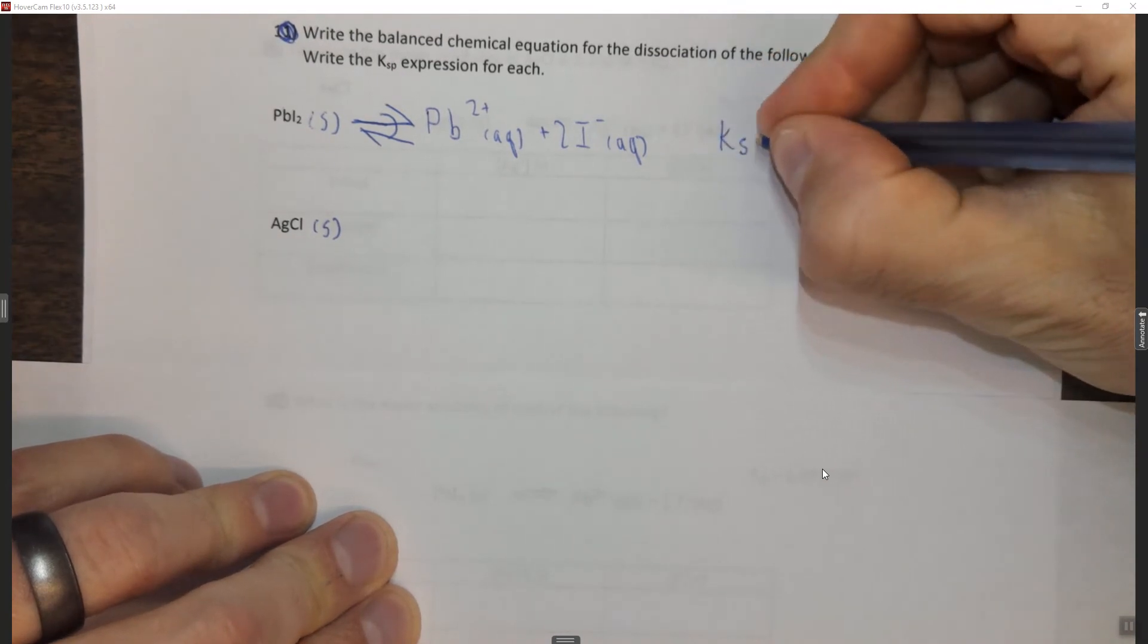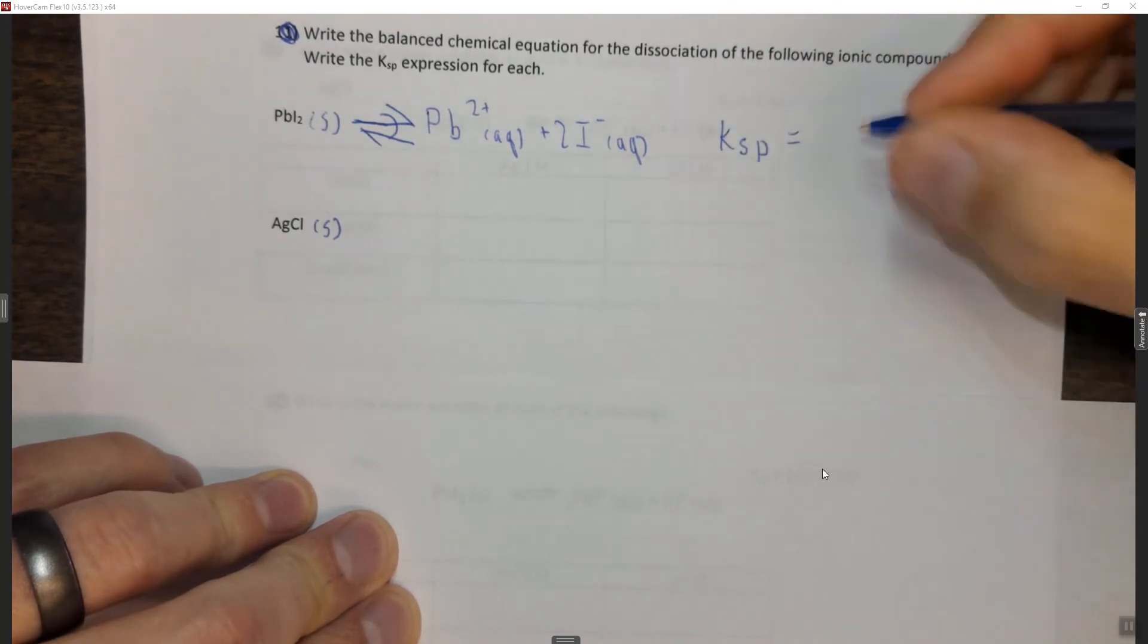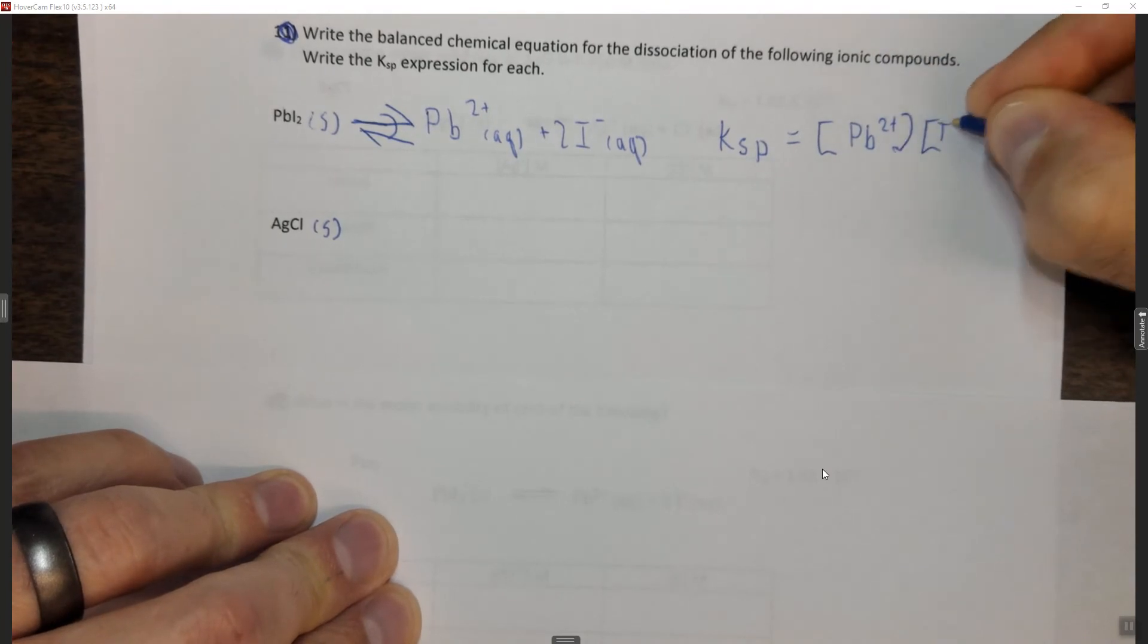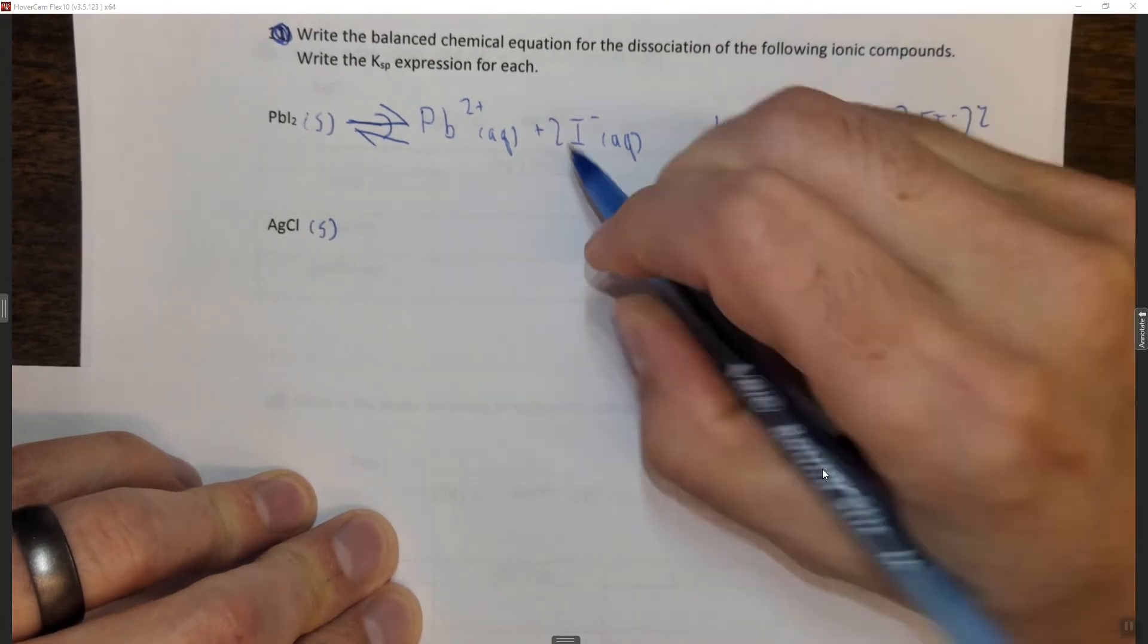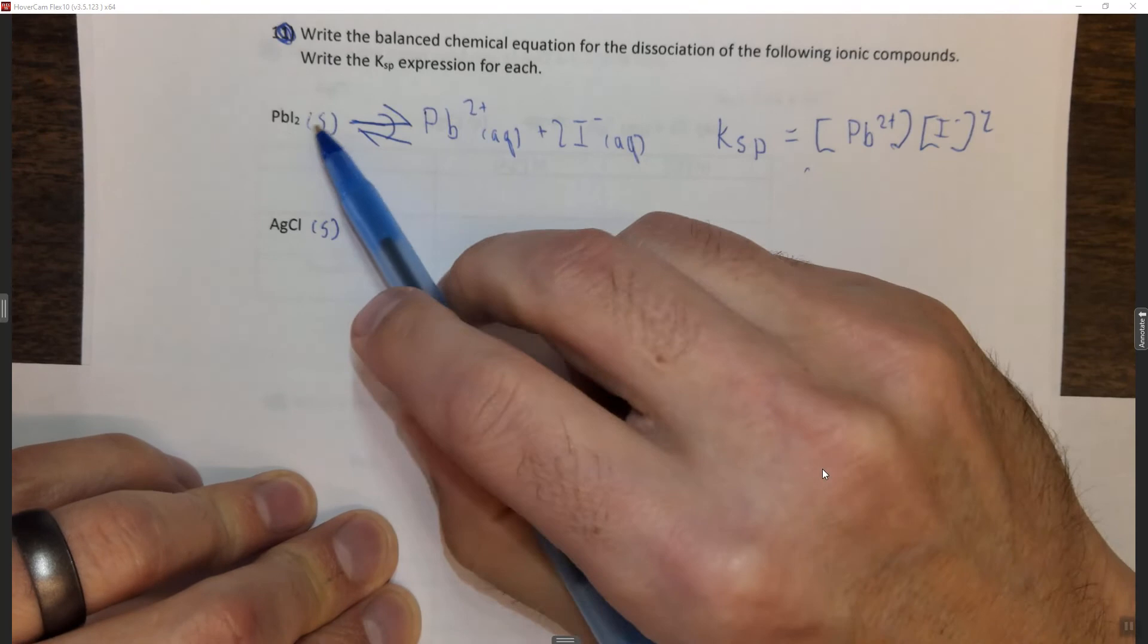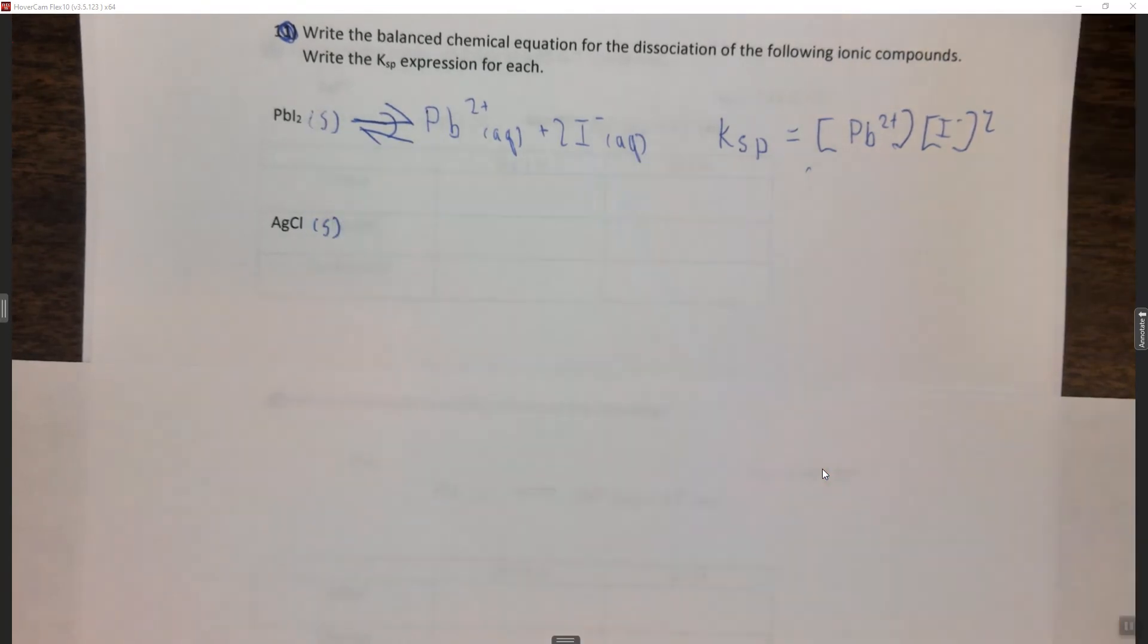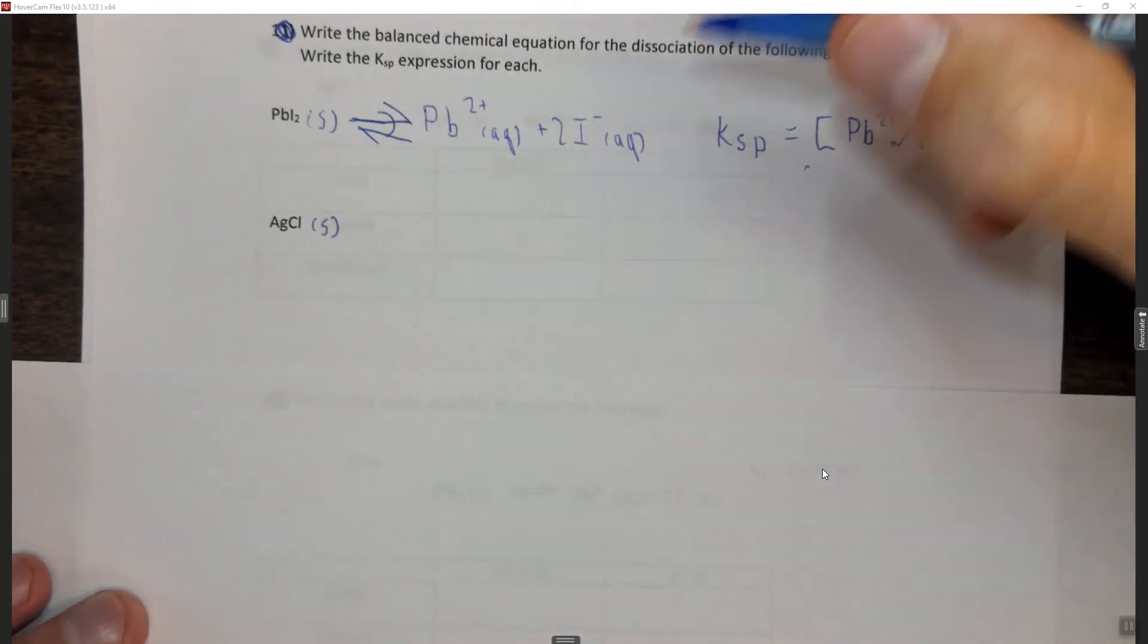The Ksp expression for this is products over reactants. So concentration of Pb²⁺ times concentration of I⁻ squared because there's two of them. We don't put the concentration of PbI₂ because it's a solid. The Ksp is an expression for slightly soluble compounds.